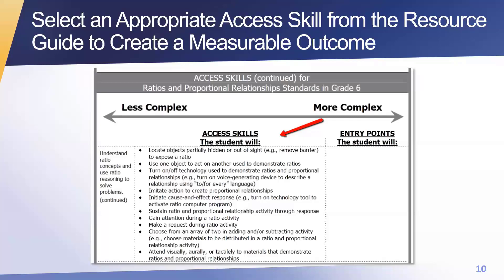The expectation is that in all of the occasions where you're collecting data on the skill, it will occur in an activity related to the academic content. For example, one access skill says: locate objects partially hidden or out of sight to explore a ratio. Another: use one object to act on another to demonstrate ratios. Or: turn on or off technology used to demonstrate ratios in proportional relationships.